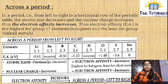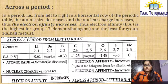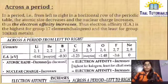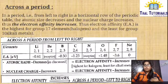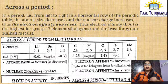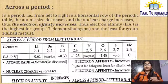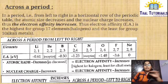Electron affinity is least for Group 1, that is alkali metals. In this picture, you can see that atomic radius is decreasing, so electron affinity increases. And if nuclear charge increases, even electron affinity increases. Therefore, electron affinity increases across a period from left to right.